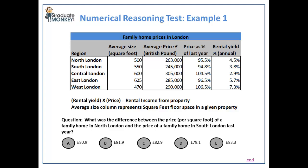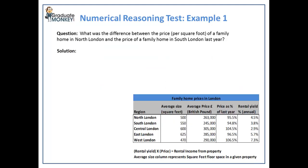In order to calculate this difference, first you need to understand what per square foot price means. Also, you will need to work out last year's prices for the given two regions. Your task is to calculate the average per square foot price in two regions of London and then take their difference as the answer.